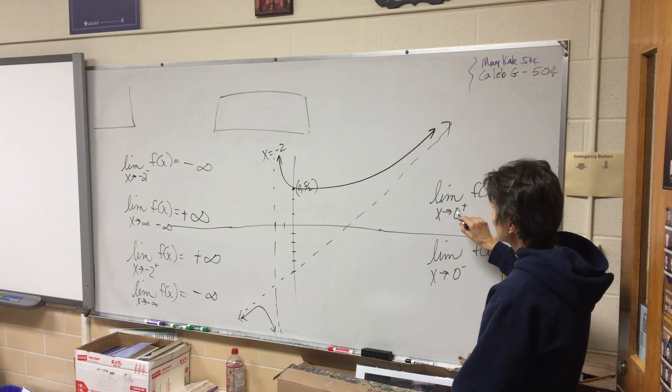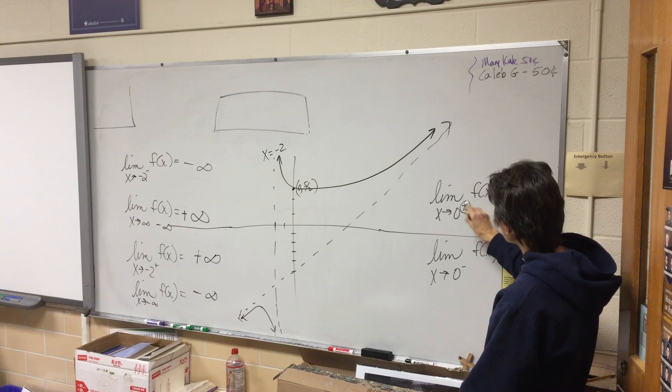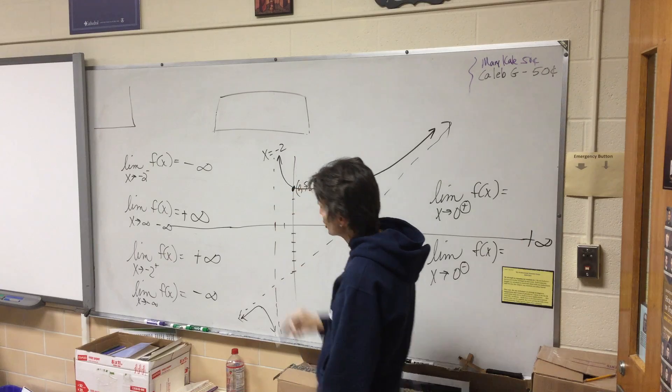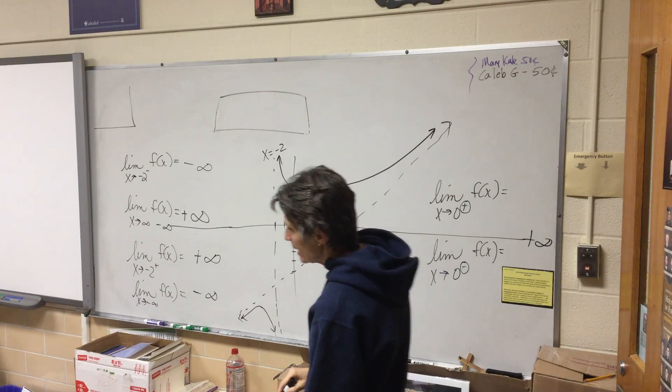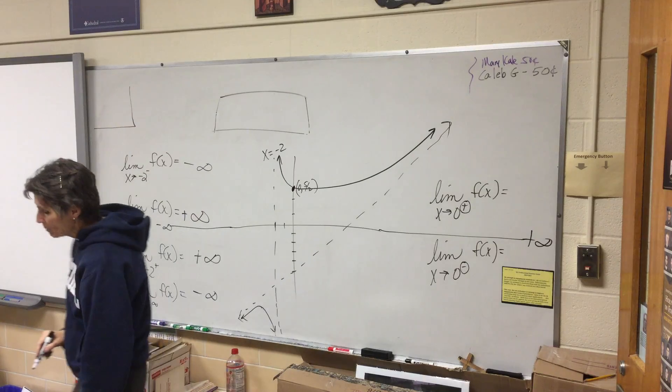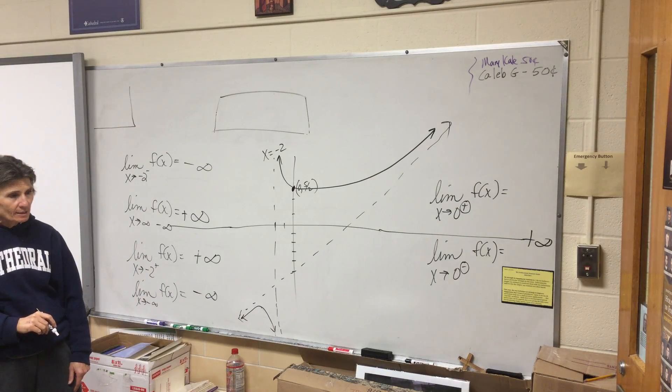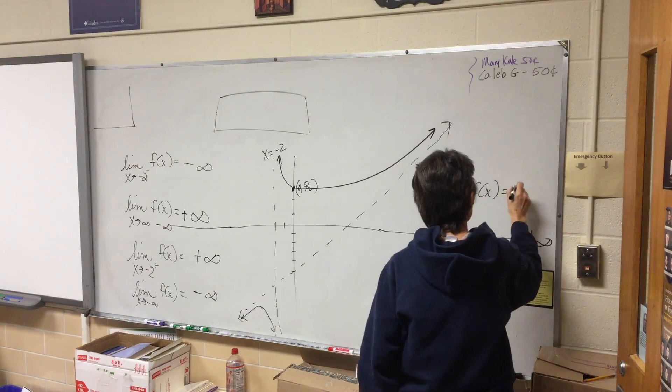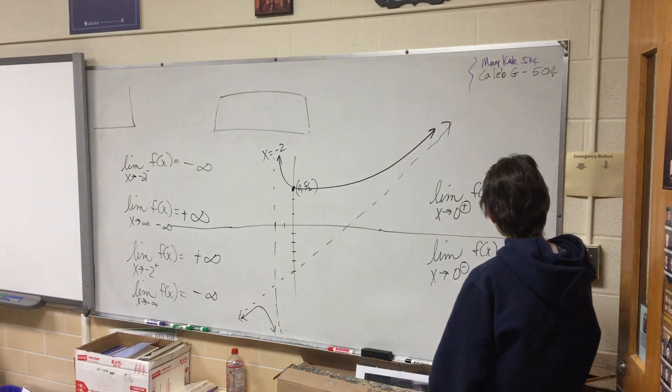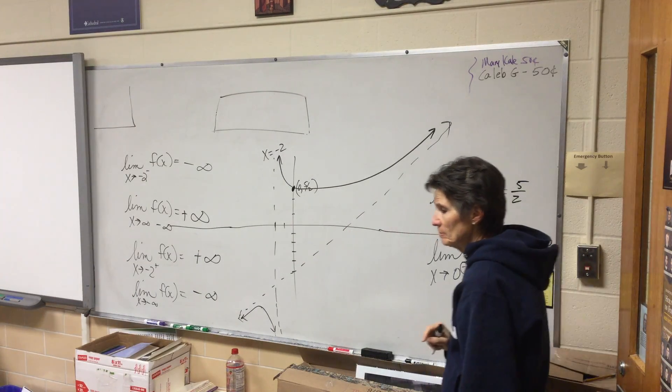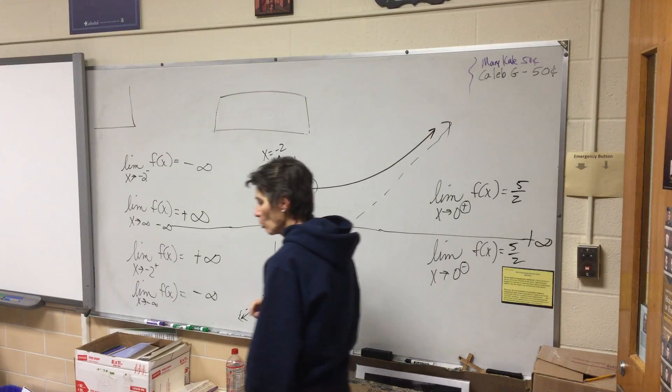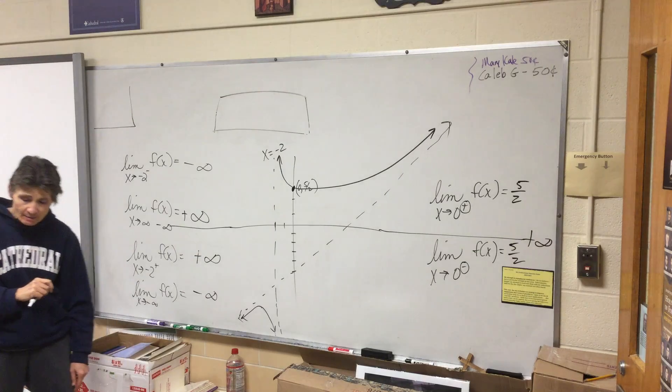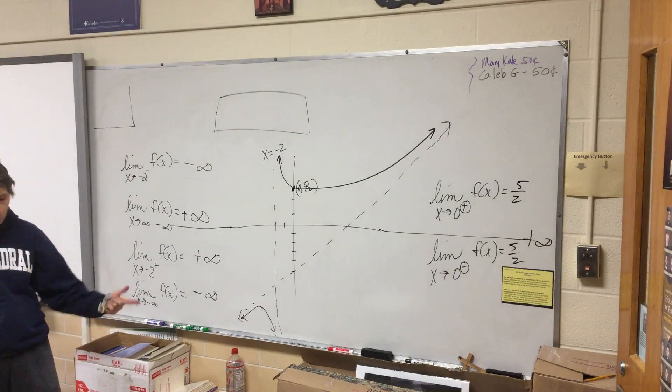Now this says approaching zero. I don't want you to worry about these because zero is not an asymptote, it's a point. And when you are approaching a point, the limit is the y value. So the answer to both of these would just be five halves because that's a point and limits are y values.